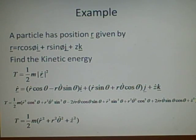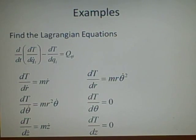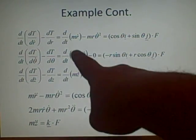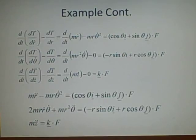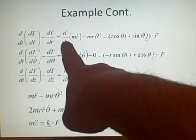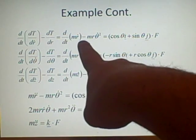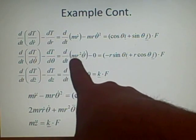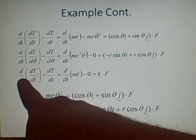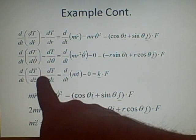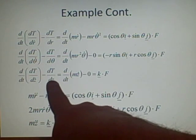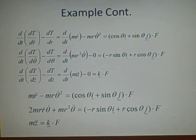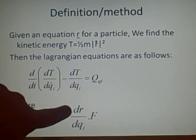Substituting all these values into the Lagrangian equations gives: for r: d over dt of (m r-dot) minus m r theta-dot squared; for theta: d over dt of (m r squared theta-dot) minus zero; and for z: d over dt of (m z-dot) minus zero. Now we need to work out the generalized forces Q-i.